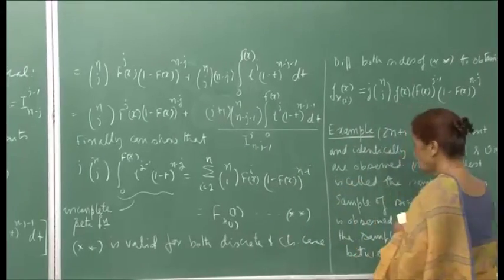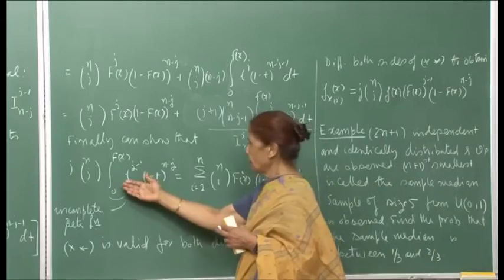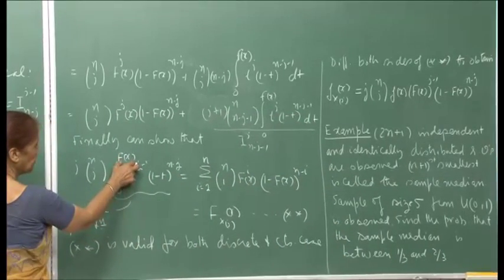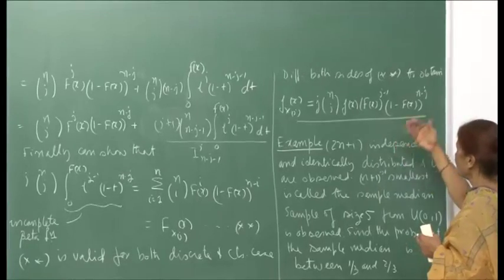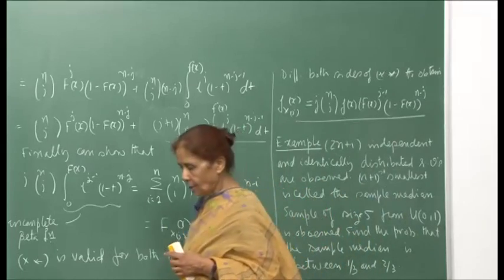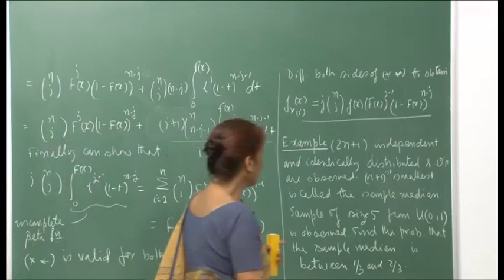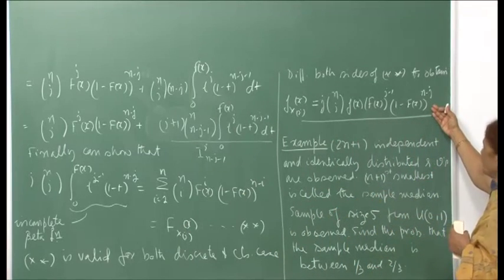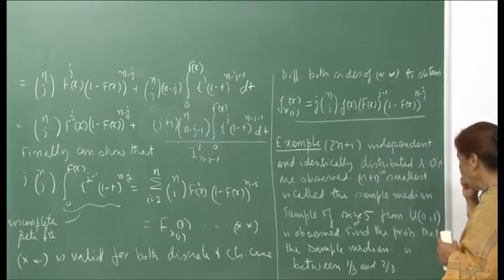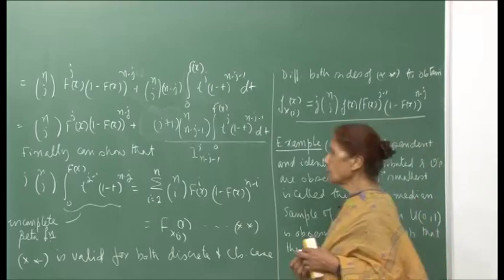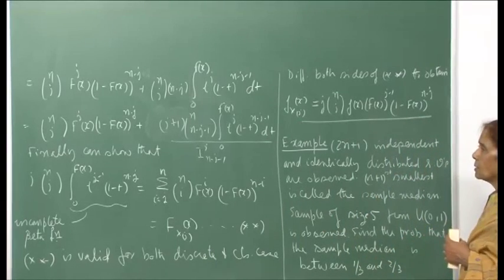When you differentiate both sides, you get f_{X_j} on the left — the PDF of X_j. This is differentiation under the integral sign: since the upper limit is a function of x, it becomes f(x), and you substitute t = F(x). For special cases such as uniform or normal distributions, it is easier to get explicit expressions for the CDF and PDF.